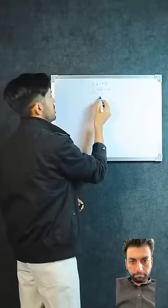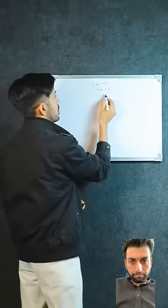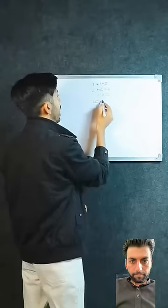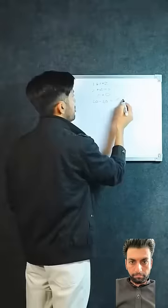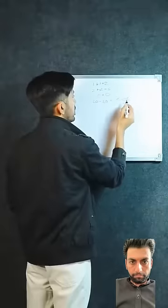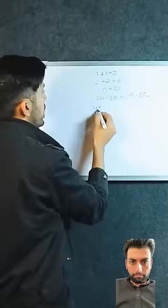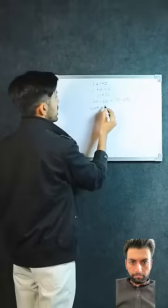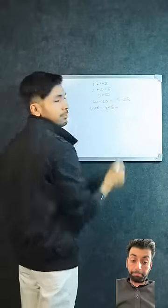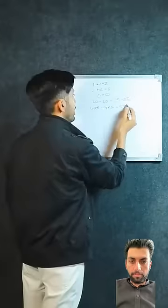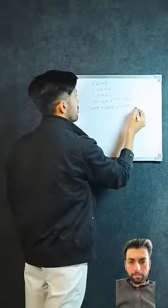When we start with zero, we'll start with zero equals zero. Now what can we do with zero? Twenty minus twenty. And what can we do with zero? Four into five minus four into five. And what can we do with twenty? Five into five minus five into five.